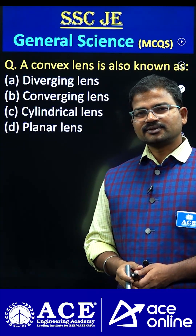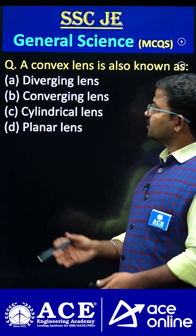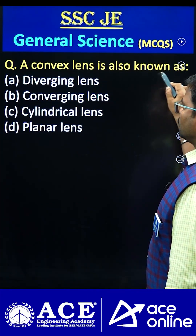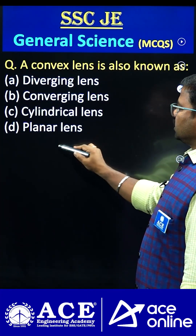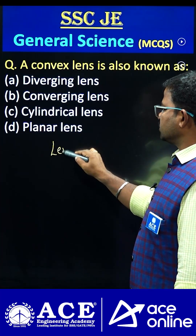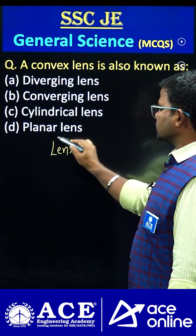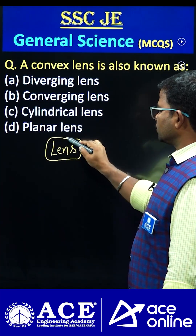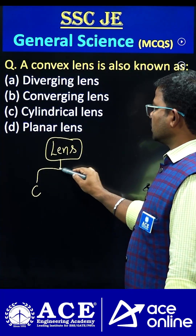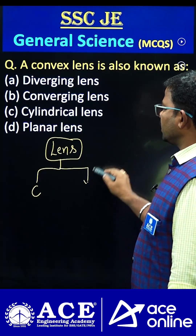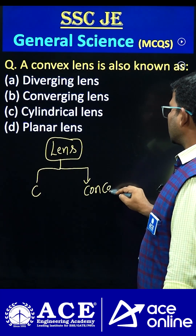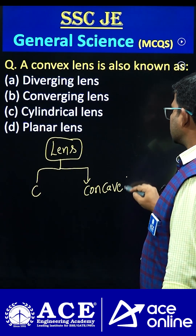Hi students, welcome to ACE online. A convex lens is also known as... Generally, if you consider lenses, they have been classified into two types: one is convex lens and the second one is concave lens.